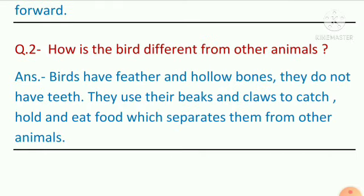Question 2: How is the bird different from other animals? Ek bird baaki animals se kaisi different hoti hai? Answer: Birds have feathers and hollow bones. They do not have teeth. They use their beak and claws to catch, hold, and eat food, which separates them from other animals. Unke paas feathers aur hollow bones hoti hai, aur teeth nahi hoti. Woh apne beaks aur claws ka use karte hai khaana pakadne aur khane ke liye. After Question 2, draw a line with the help of your scale.